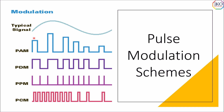In pulse modulation, the pulse carrier is varied. The amplitude of the pulse carrier is varied with respect to the modulating signal. In pulse width or pulse duration modulation, the duration or width of the pulse carrier is varied with respect to the instantaneous amplitudes of the modulating signal. In pulse position modulation, the position of the pulse carrier is varied with respect to the modulating signal. Pulse code modulation is a method used to digitally represent sampled analog signals.